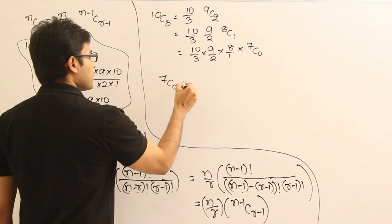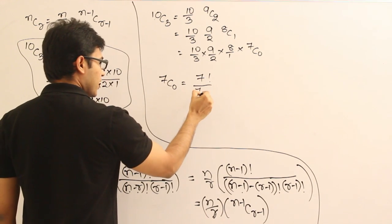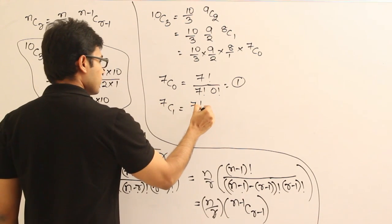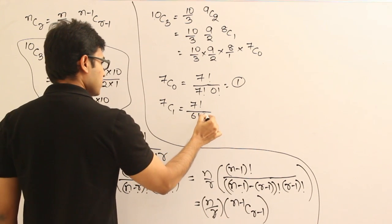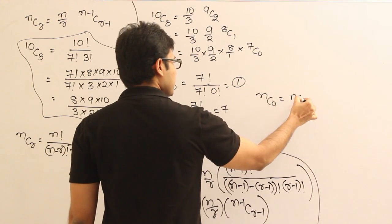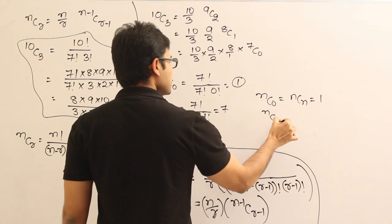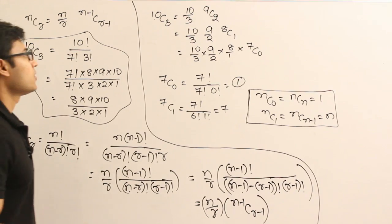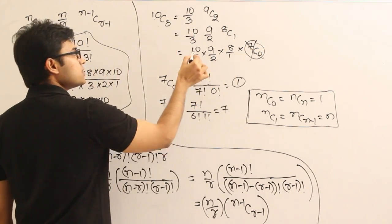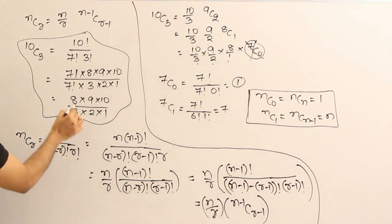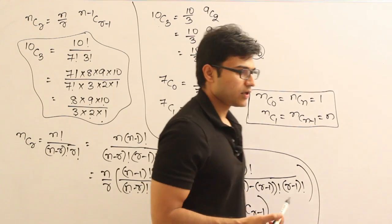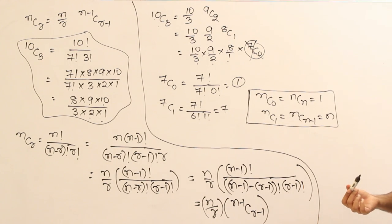Similarly, 7C1 equals 7 factorial divided by 6 factorial into 1 factorial, which is 7. So remember: NC0 equals NCN equals 1, and NC1 equals NCN minus 1 equals N. These are the most frequently occurring border cases. Since 7C0 is 1, we can ignore it. Therefore 10C3 equals 10 into 9 into 8 divided by 3 into 2 into 1. These formulas will come into use while simplifying, and I will tell you where to apply them in problems.